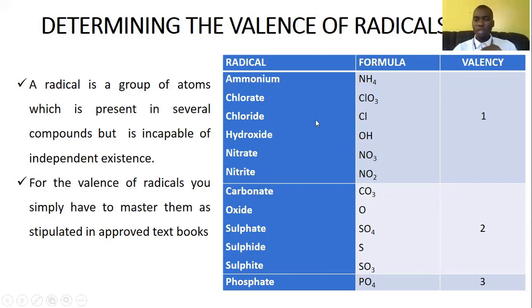Examples of radicals that you're going to encounter in most instances are displayed here. So as you can see, for example, ammonium, which has got the formula NH4, and the valence is one. You can check all these. All these that are in here, they've got the valence of one. Then we've got the carbonate, CO3, the valence is 2. So all these that are in here, they've got a valence of 2. Then we've got the phosphate, which is PO4. So the valence here is 3. So these, you just need to memorize them. No formula, no rule, but just memorize.